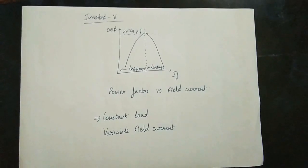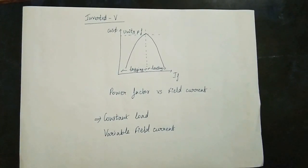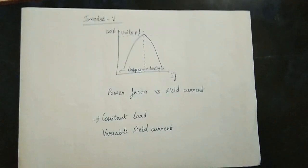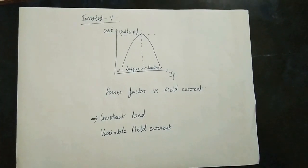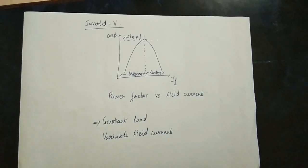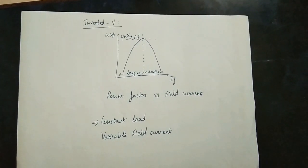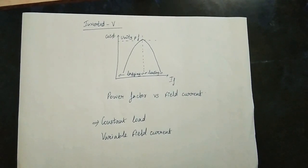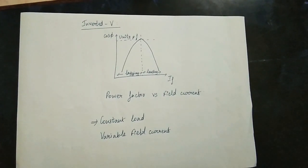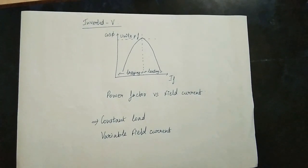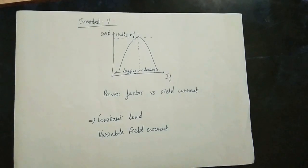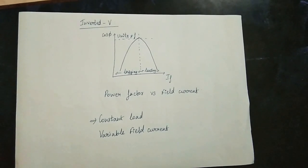So, V curve and inverted V curve are characteristics of the synchronous motor. If we have a constant load, then we vary the excitation. The armature current versus field current gives the V curve, and power factor versus field current gives the inverted V curve. This is a very important and practical experiment. Please leave your questions in the comment section. Thank you for watching — see you in the next video!